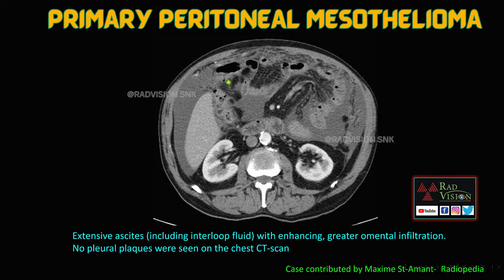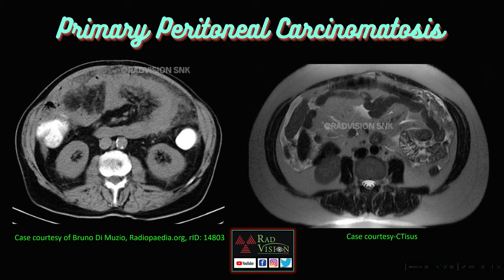In primary peritoneal mesothelioma, there is thickened omentum with infiltration and small bowel loops clustered in the mid-abdomen with ascites. Similarly, peritoneal carcinomatosis shows thickened edematous omentum with nodularity and clustering of bowel loops in the center — both mimicking the cocoon appearance.